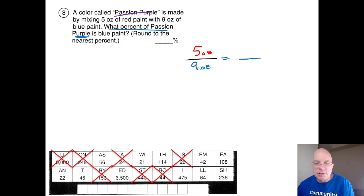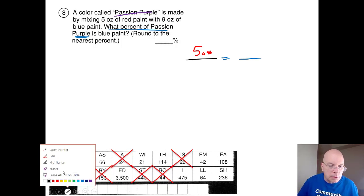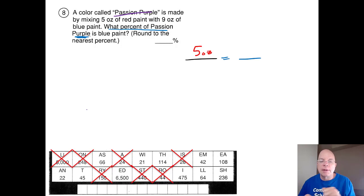I hope you see why I'm changing this. The whole idea is I'm mixing my red and my blue to get passion purple. But if I mix five ounces of red and nine ounces of blue, I get 14 ounces of passion purple. If we want to know what percent of passion purple is blue paint, I really shouldn't have put my five ounces of red there. I should have put my nine ounces of blue.